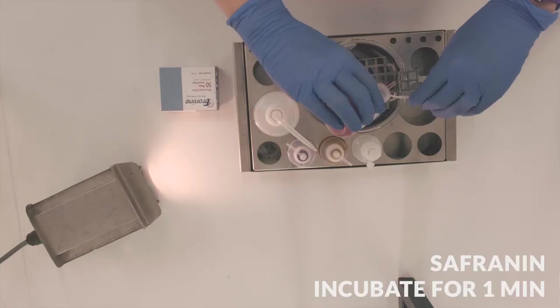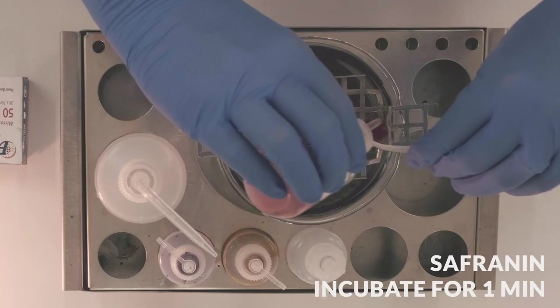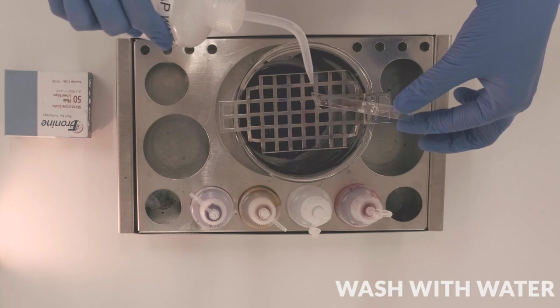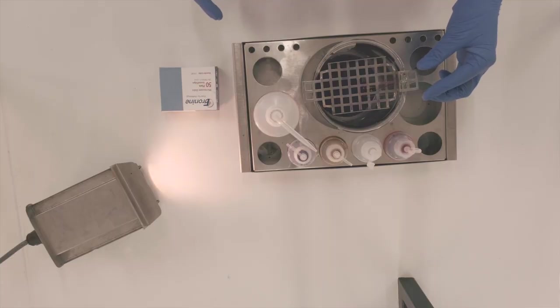The final step is the safranine counterstain. As before, we apply the counterstain and allow it to incubate for one minute. This stains gram negative bacteria with a pink color. It's not visible in already stained gram positive bacteria because the crystal violet is too intense. Wash off any excess stain and dry the slide. It is now ready for imaging.